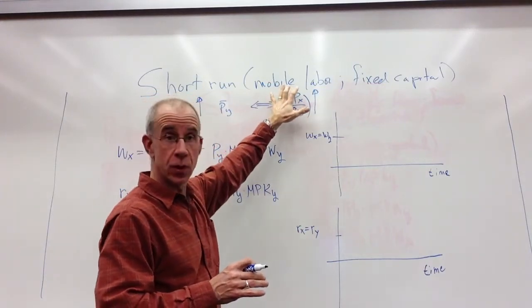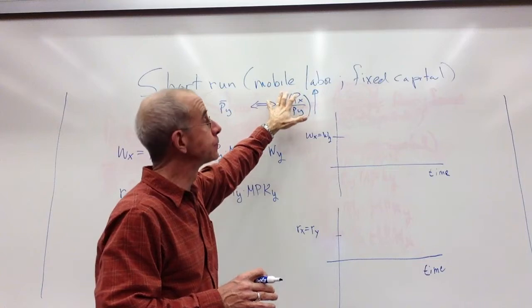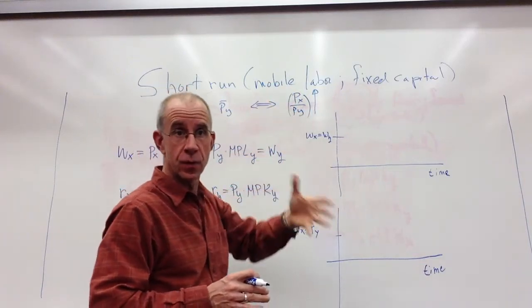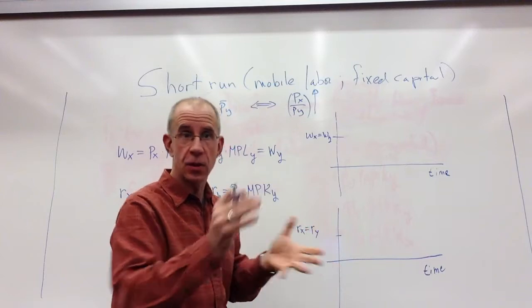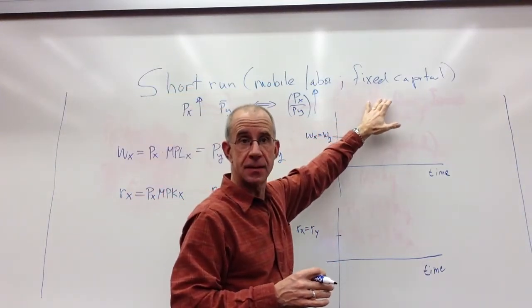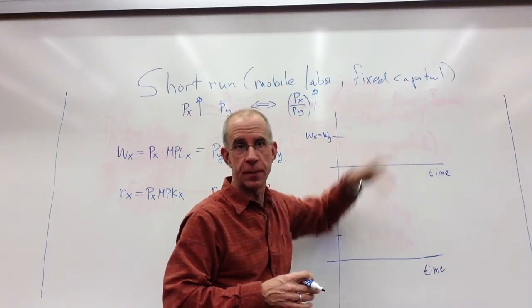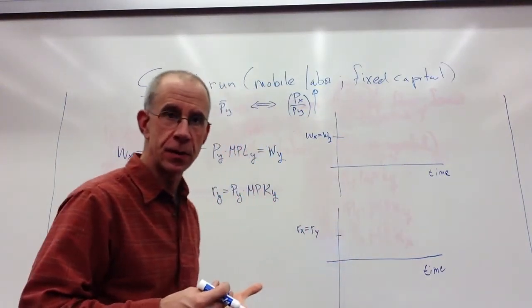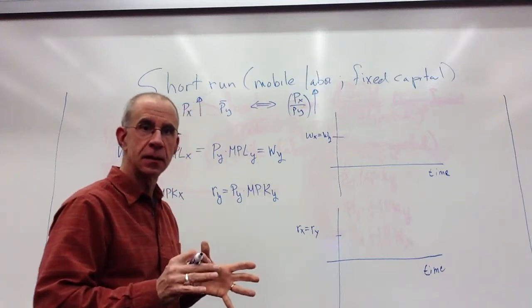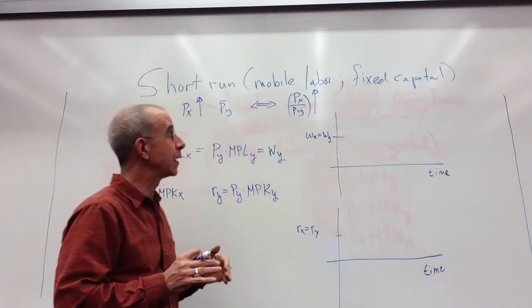When we talk about the short run, we're talking about a situation where at least one of the factors is fixed. One of the inputs used in production cannot move out of that industry. In this particular example, we're going to be looking at mobile labor.